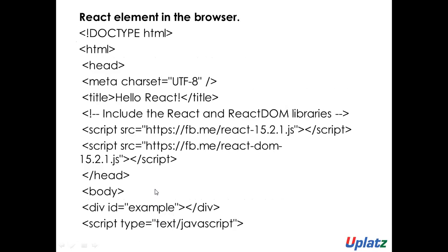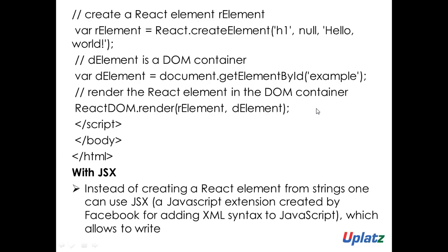After getting the element, I need to render the React element into the DOM, rendering both the R element and the D element. The R element is the React element I created, and to render to DOM I create the D element. When you run the program you will get 'hello world'. This is without JSX. With JSX, instead of creating the React element from strings, we can use JSX.